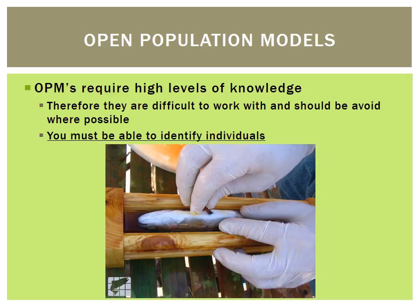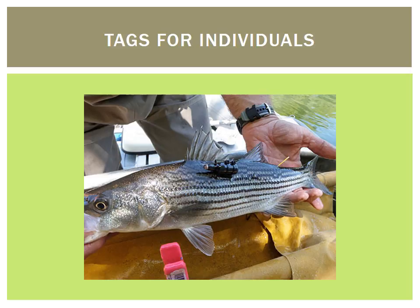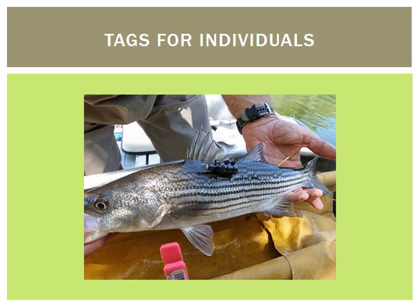Down here is what's called a PIT tag — a tiny computer chip inserted inside a glass container so it doesn't react with the fish, then placed inside the fish, usually in the body cavity. These are common also in pets. They don't use a battery; they use the charge from a handheld unit that passes over them, so they last indefinitely. You'll always have the PIT tag around. There are also very complex individual tags — this is an acoustic tag that can also provide information about depth, temperature, and where the fish is located. Big tags like this are also common for individual marking. So that's the end of this lecture — a brief introduction to closed population models. Next time we'll talk about open population models, which is what I primarily deal with.